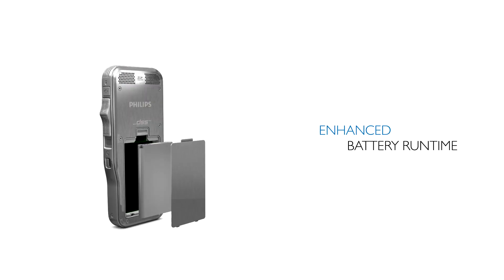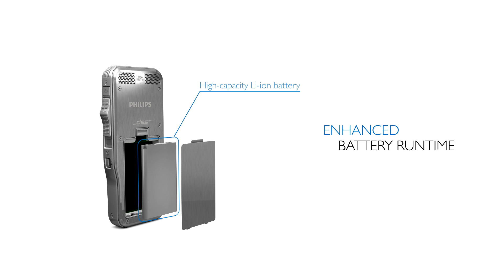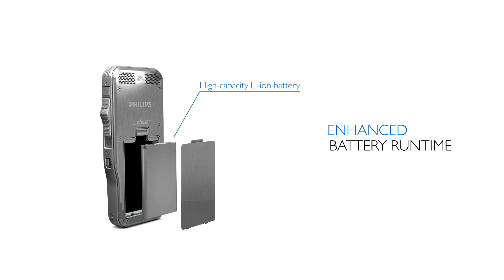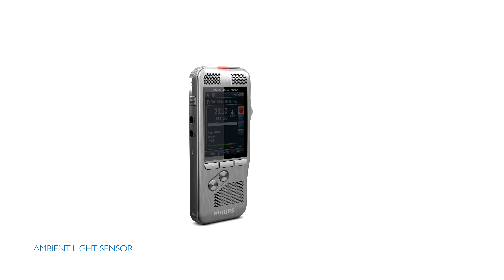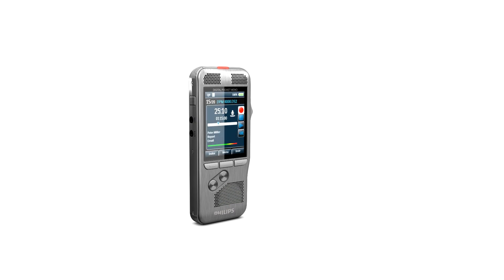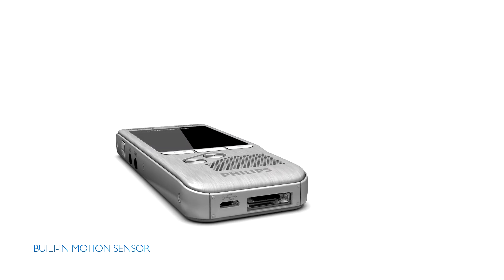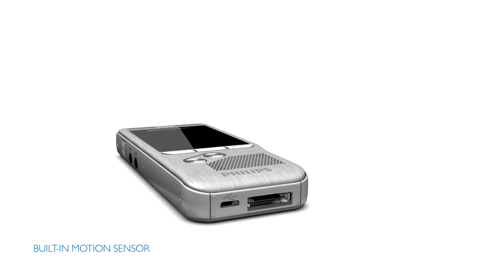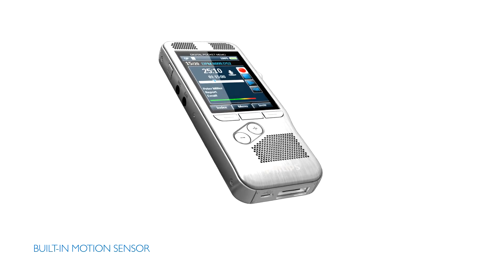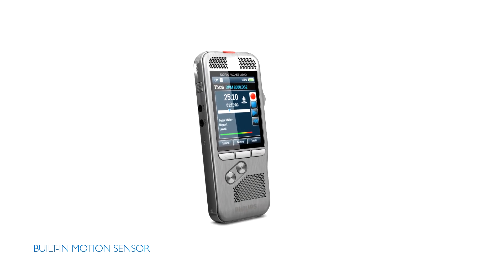The efficient battery, together with the light and motion sensor technology, maximizes runtime. The ambient light sensor adjusts the brightness of the display and the motion sensor switches automatically into standby mode when the device is idle. Once the Pocket Memo is picked up again, it is ready to record within seconds.